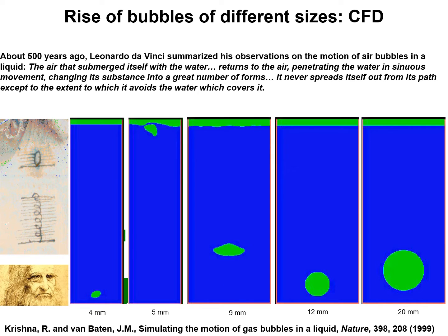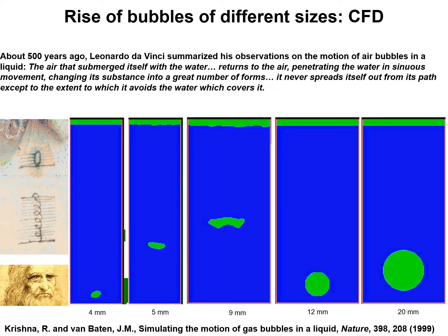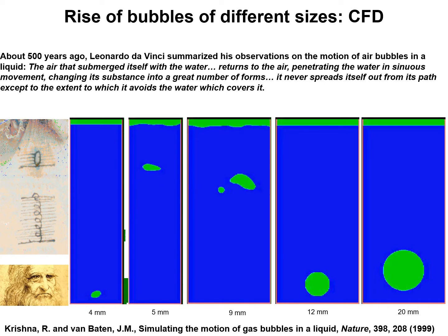Let's look at a five millimeter bubble — similar but not exactly the same. It also moves up following a sinuous path.